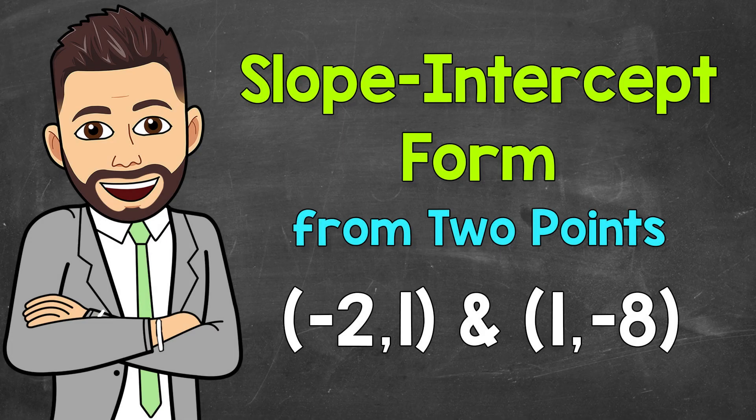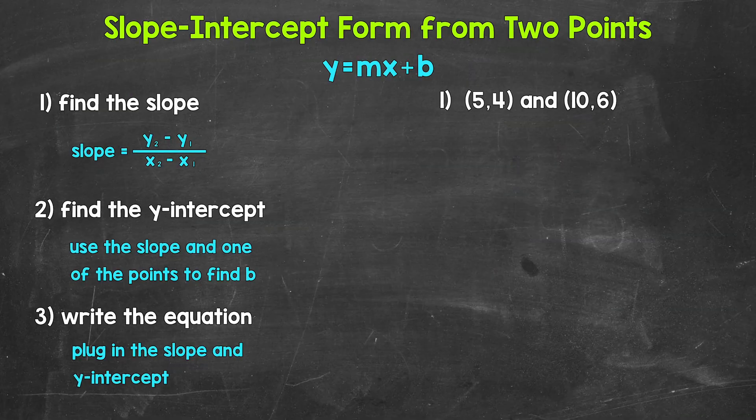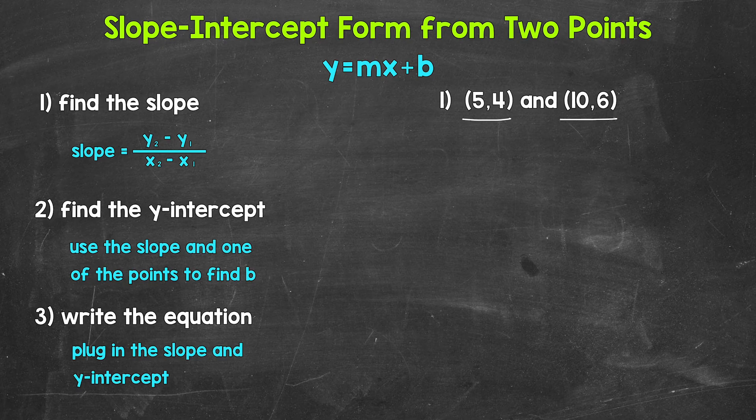Welcome to Math with Mr. J. In this video, I'm going to cover how to write an equation in slope-intercept form from two points. Let's jump into number one, where we are given two points on a line: (5, 4) and (10, 6). Our line goes through those two points, and we need to use them to write the equation of the line in slope-intercept form.